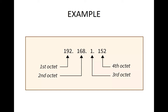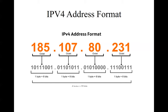This belongs to a Class C IP address. Let me discuss the classes and their ranges. The IP address 185.107.80.231 represents an address belonging to Class B. In the case of Class B, the first two bytes indicate the Net ID and the remaining bytes indicate the Host ID.